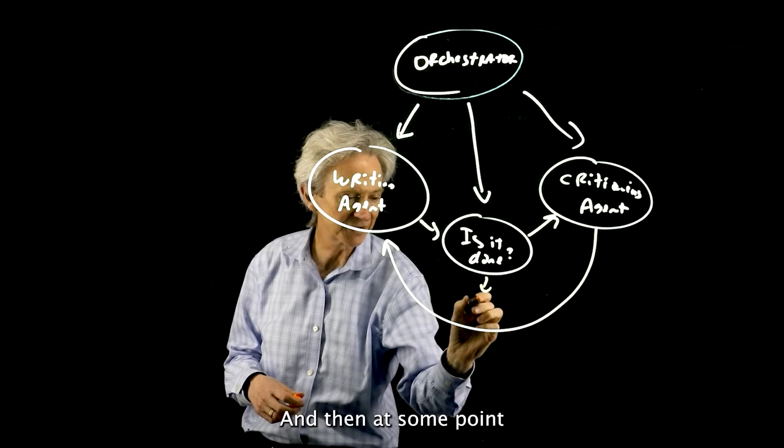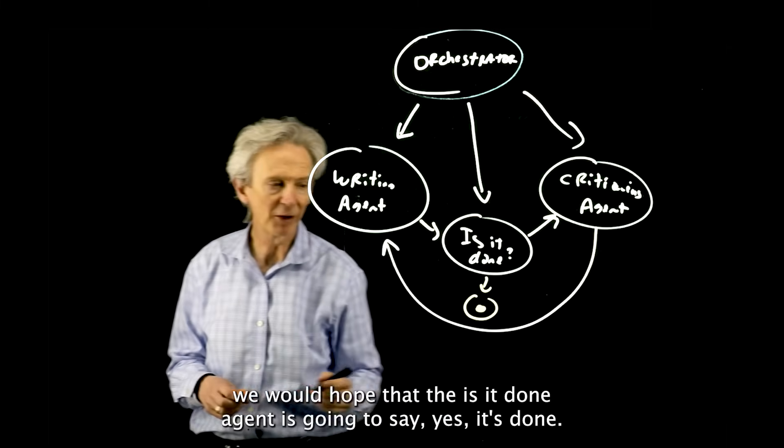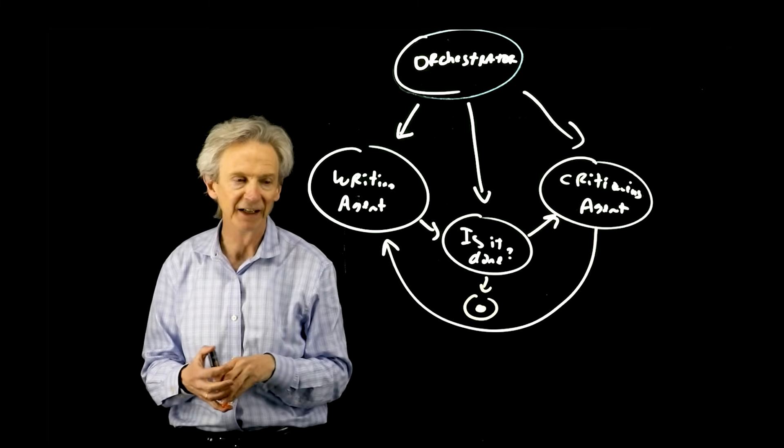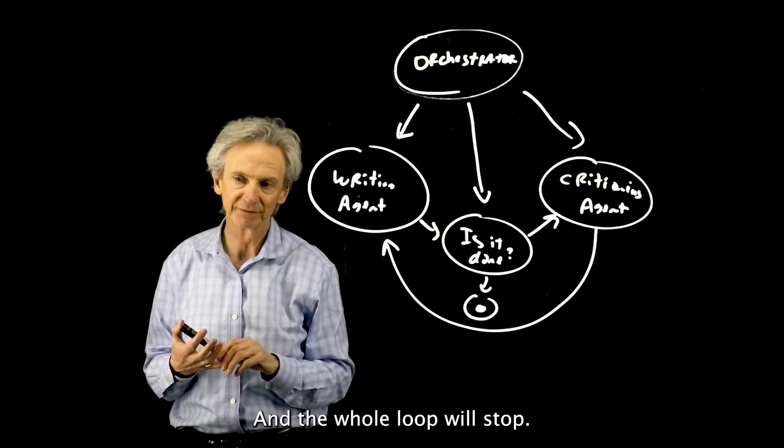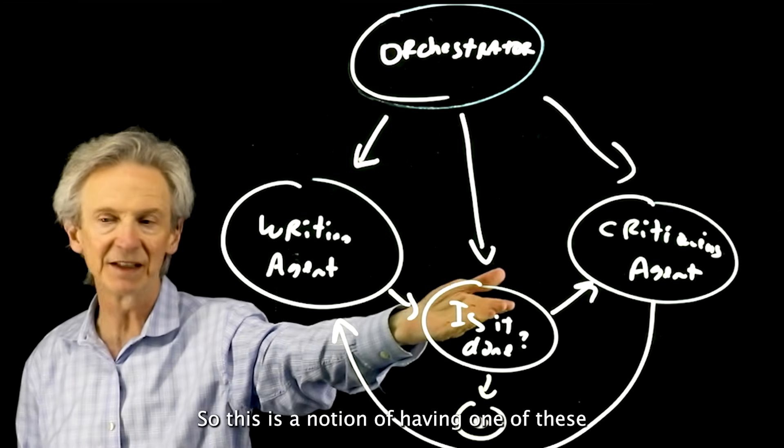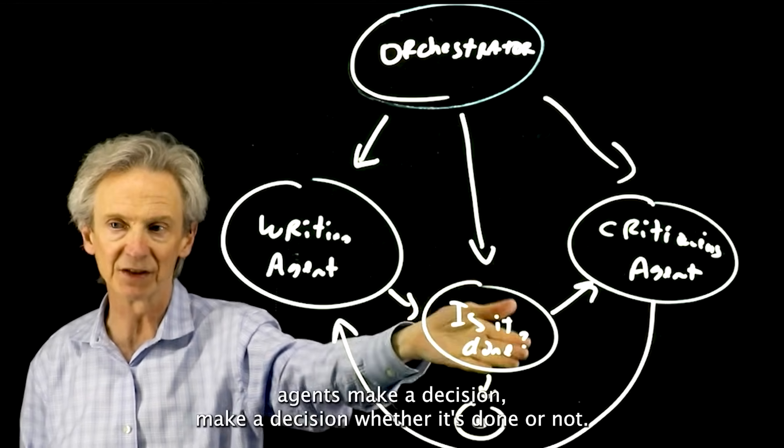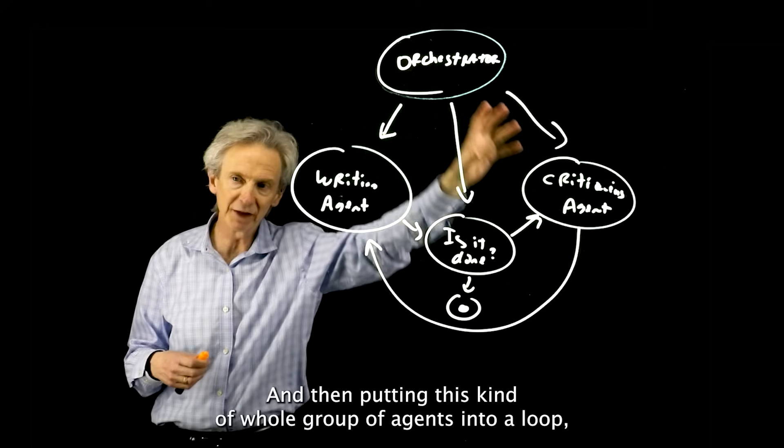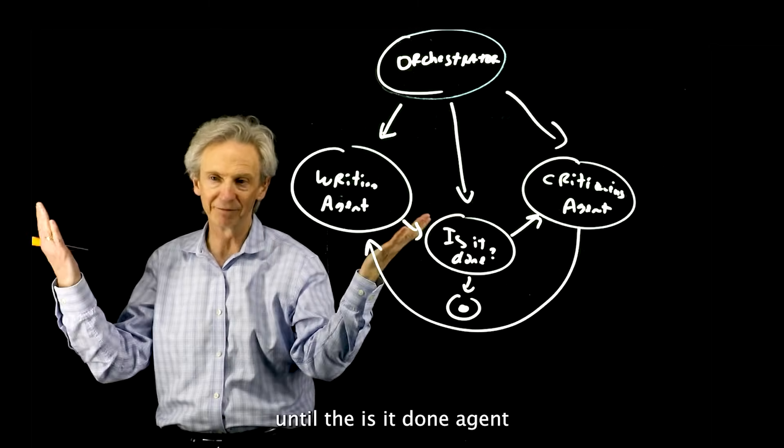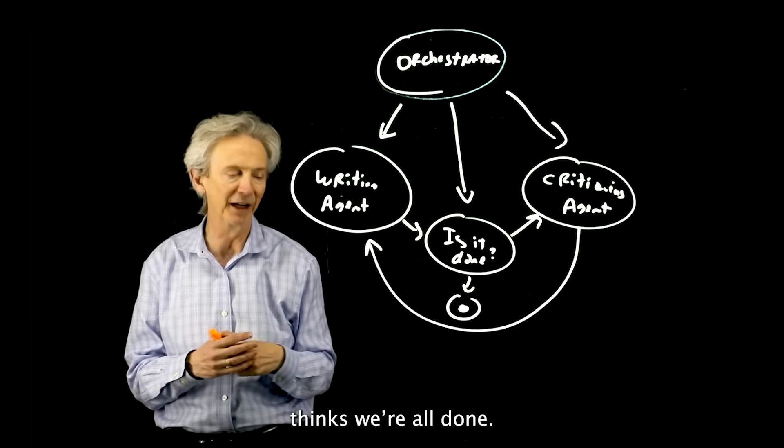At some point, we would hope that the is it done agent is going to say yes, it's done, and the whole loop will stop. This is the notion of having one of these agents make a decision whether it's done or not, and then putting this whole group of agents into a loop until the is it done agent thinks we're all done.